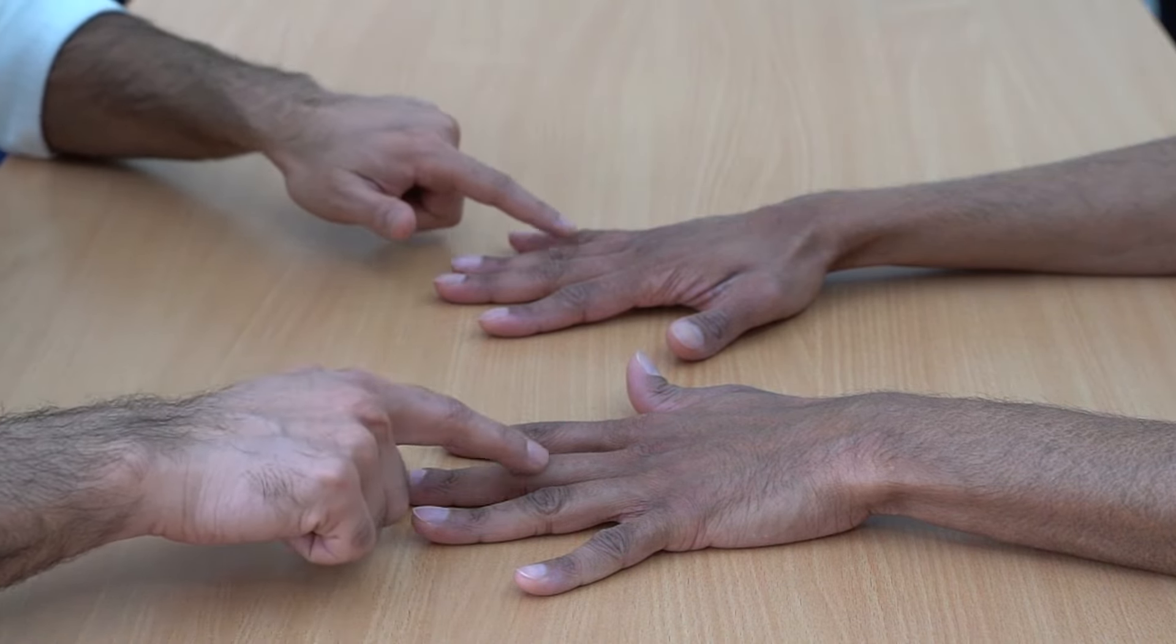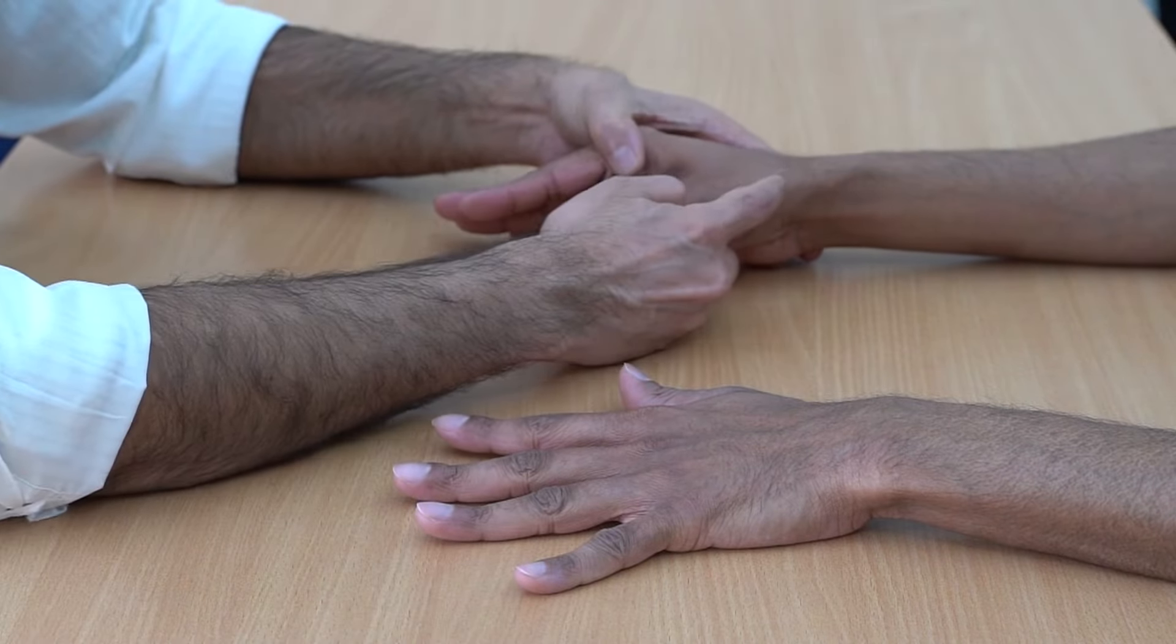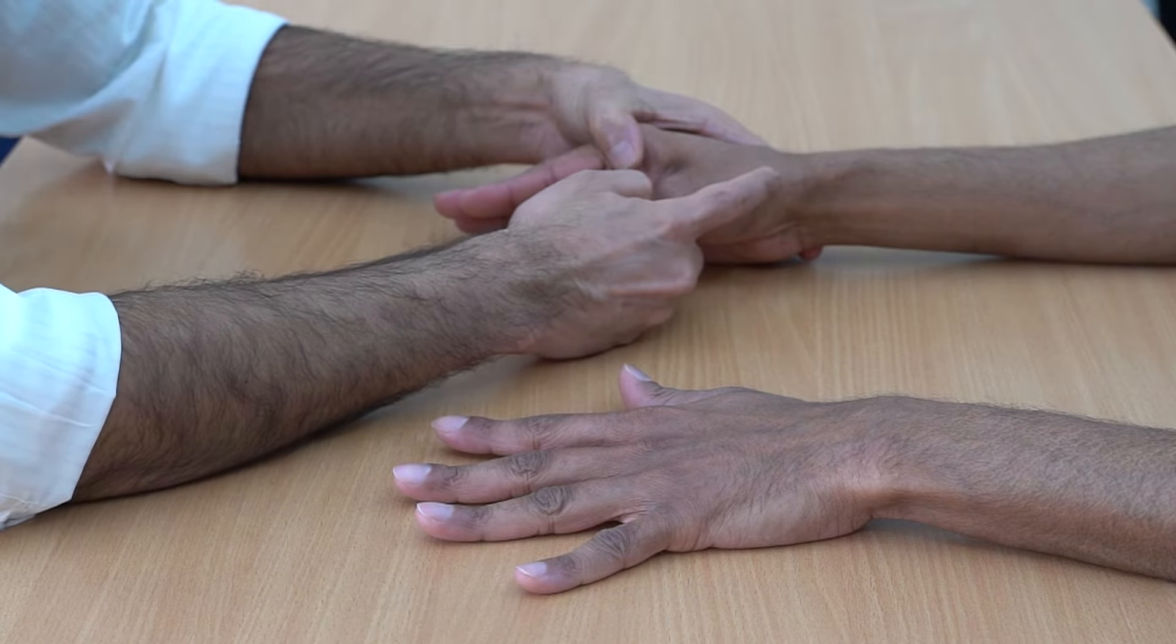Any deformity in the PIP joints, and again we'll see any problems in the thumb like squaring of the base, deformity, and swelling.